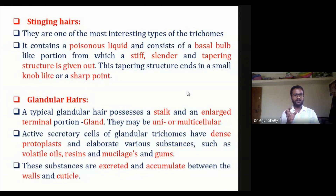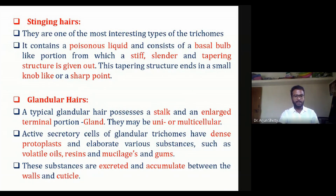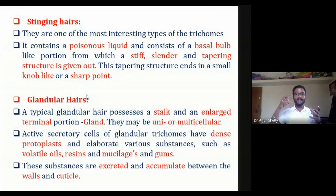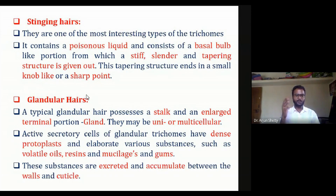Structurally, stinging hairs are quite stiff — a very tough, slender, tapering structure. At the end of the tapering structure there is a knob-like structure, and after the knob there is a small tip through which the contents are forced out. When this structure comes in contact with a person, it releases some of its poisonous substance, which may cause illness.